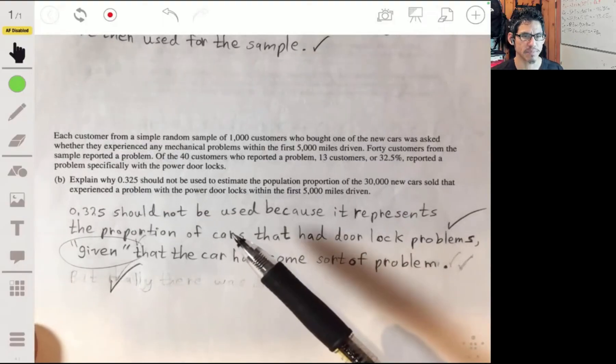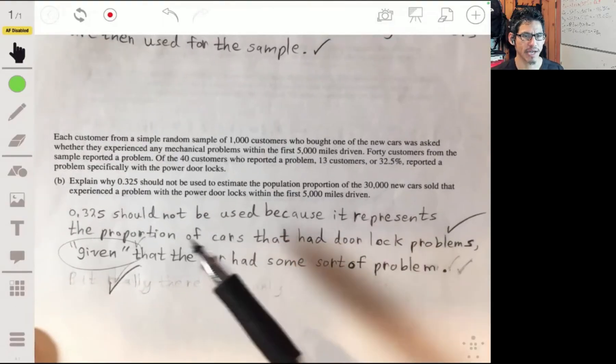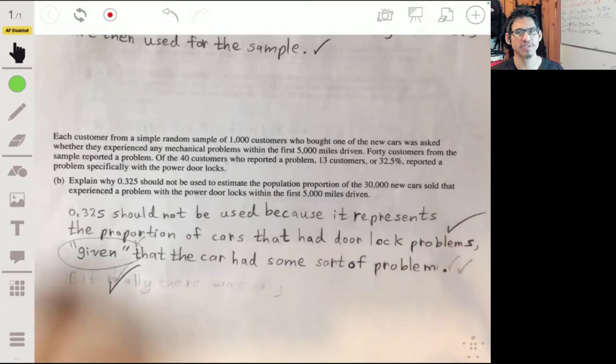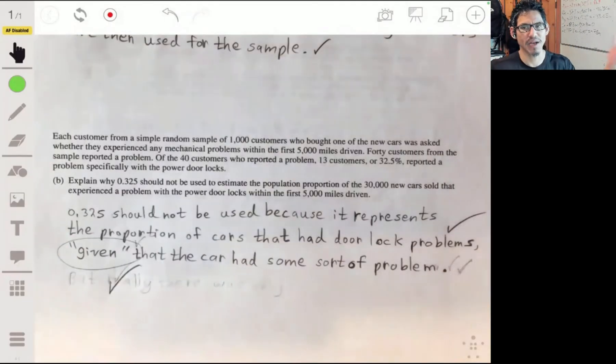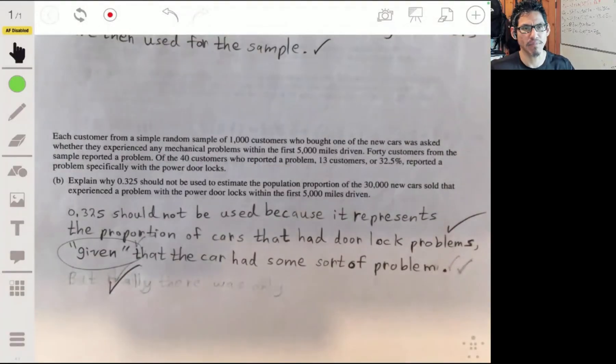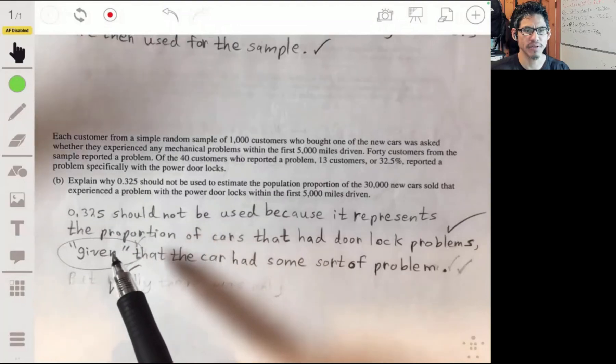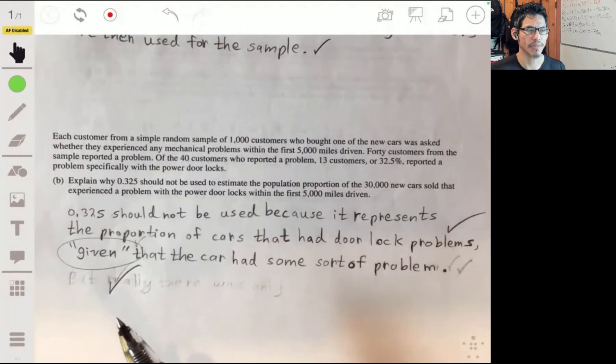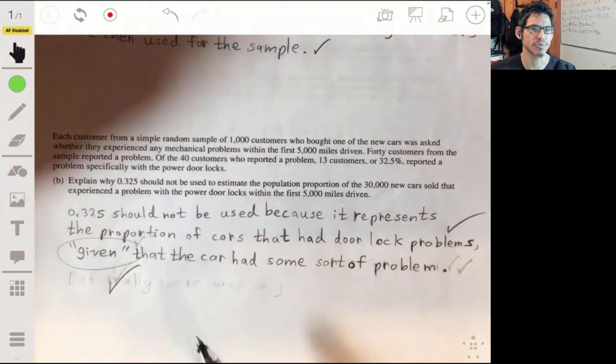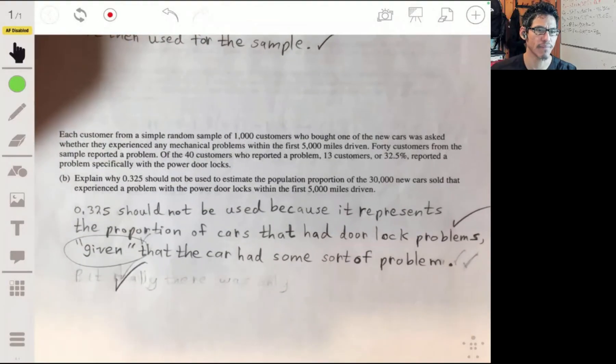You want to basically explain or show that you understand that. Because of course, if you say you have a problem, something wrong with your car, you're more likely that you're going to have a problem with the door locks because that's a possible problem. Just maybe use the word 'given' so you understand that these are not just regular customers—something was already given as a condition.